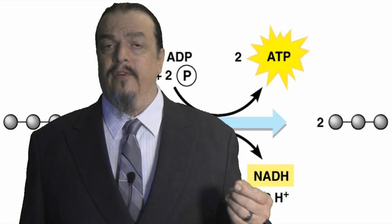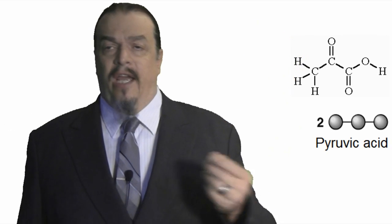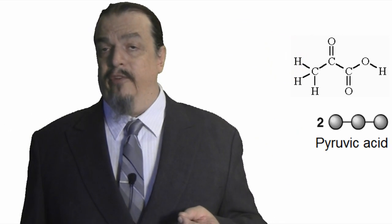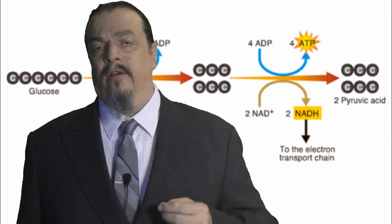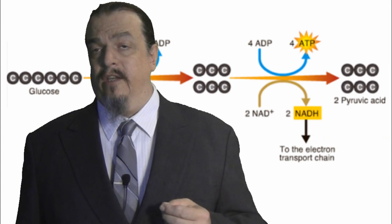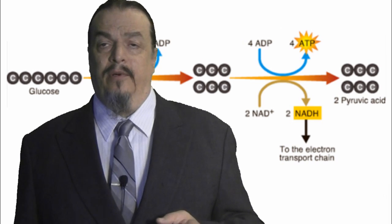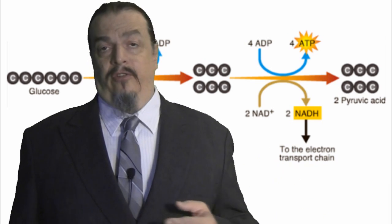The two molecules with three atoms of carbon in them are called pyruvic acid, and they're vital to the next stage called the Krebs cycle. But before we go there, glycolysis needed two ATP to get going, but it produced four ATP in the process. So at this stage, we're up by two additional ATP.